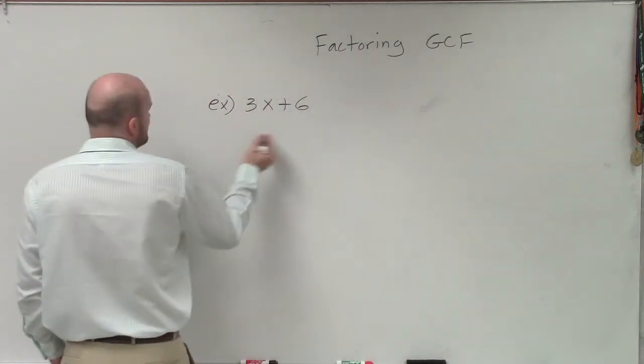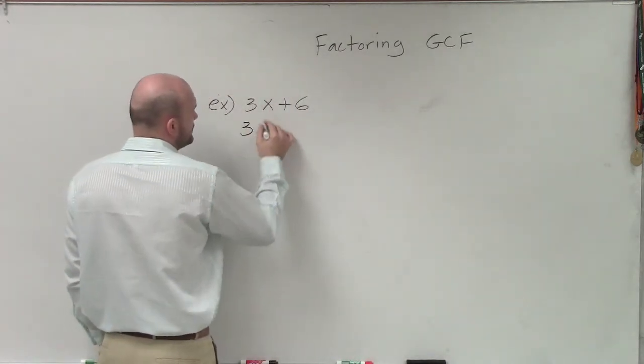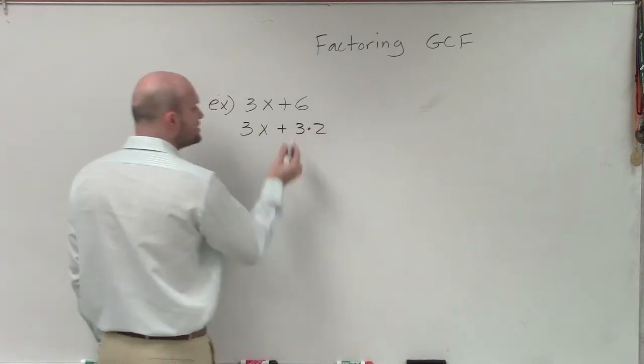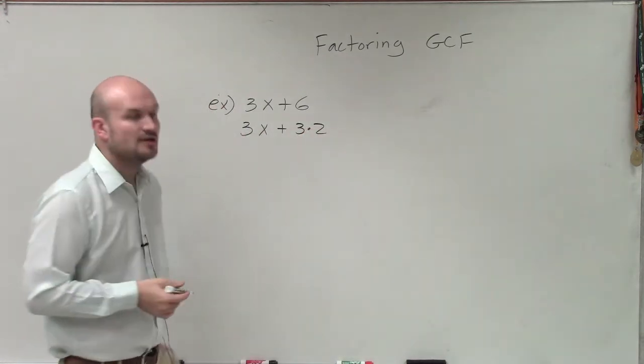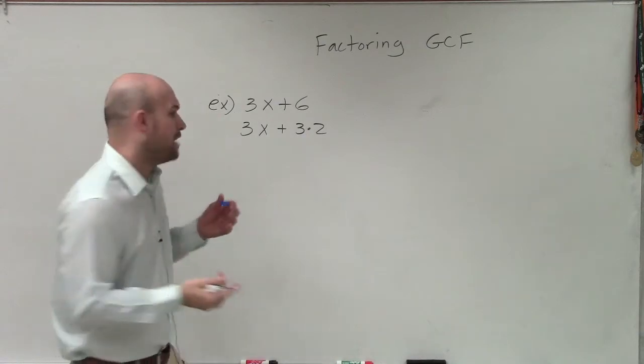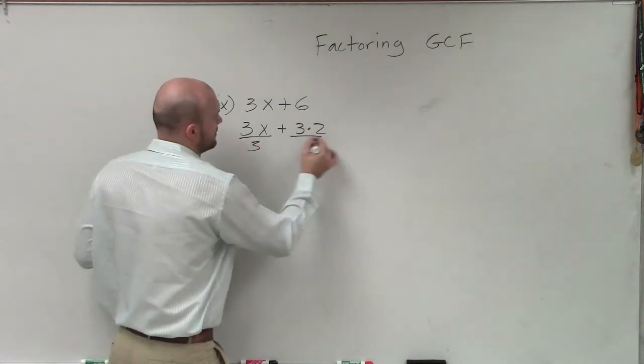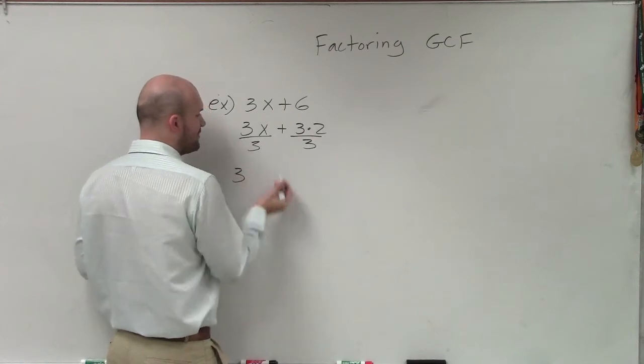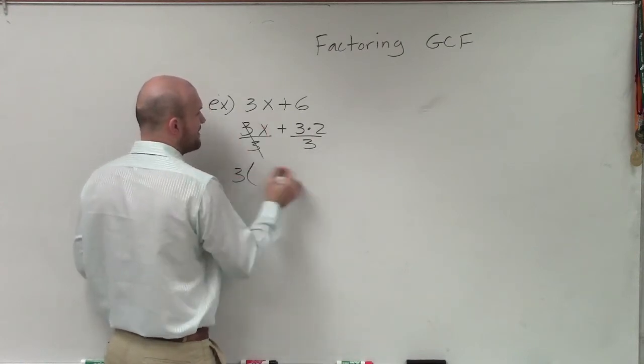And so sometimes to help you out, you can just rewrite it. So if I rewrote this as 3 times x plus 3 times 2, you can see that they both share a 3. So what I can do is I can divide out that 3 out of both of those expressions. And by doing that, if I rewrite instead of division, so when I divide those out, I'm now left with x plus 2.